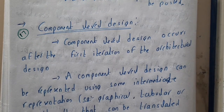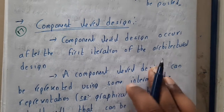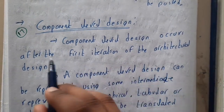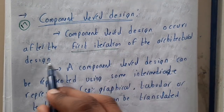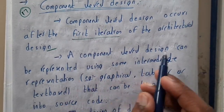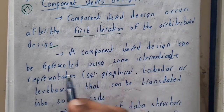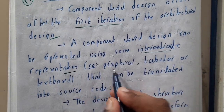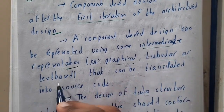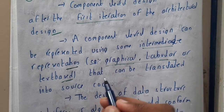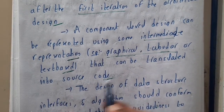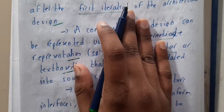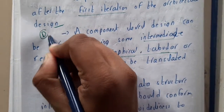Component level design occurs after the first iteration of the architectural design. A component level design can be represented using an intermediate representation — that is, graphical, tabular, or text-based — so it can be anything. This intermediate representation can then be translated into source code easily. Basically, this is the last stage of designing.